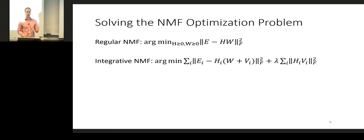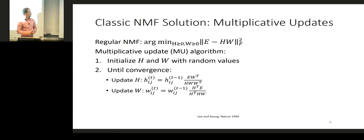Now I'll tell you about NMF and how we actually implemented this iNMF algorithm. The objective function for regular NMF is to minimize the squared Frobenius norm between the matrix and its reconstruction HW, subject to the constraint that H and W are both non-negative. The objective for integrative NMF is essentially the same, except we add a dataset-specific term, have a shared metagene matrix across all datasets, and introduce a regularization term that minimizes the dataset-specific effects. This optimization problem is non-convex.